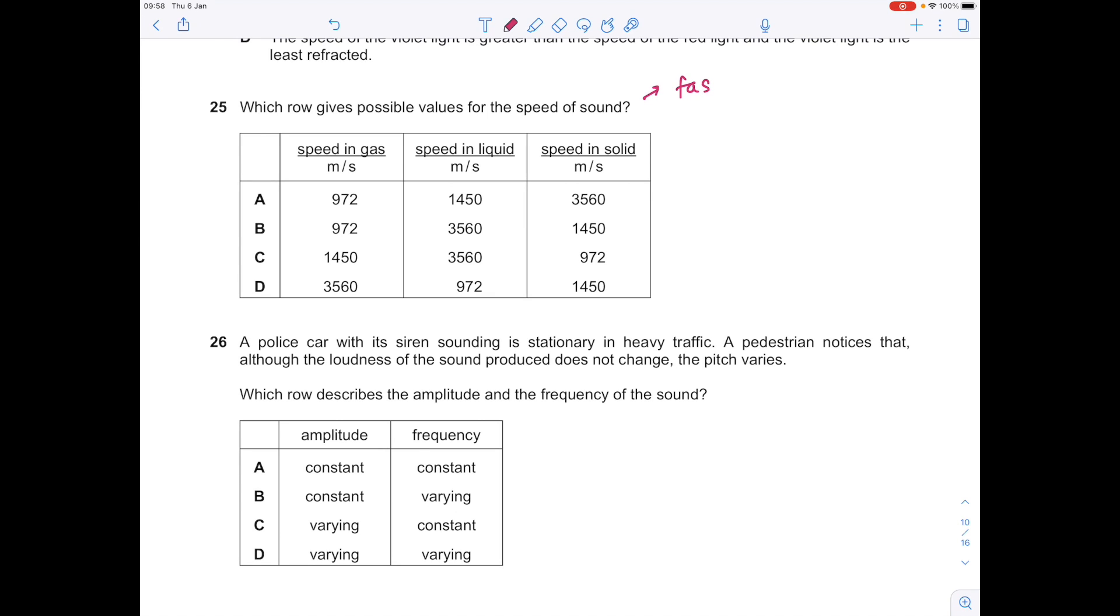Which row gives possible values for the speed of sound? Remember that sound travels fastest in a solid, because the particles are closest together. So we definitely don't want any of the options which show the opposite relationship, and that's why A is the answer.